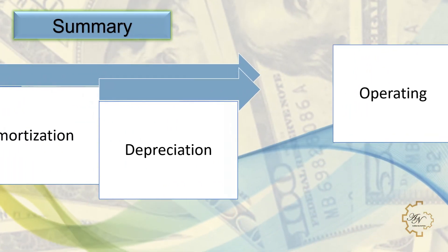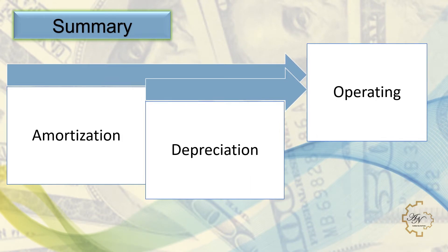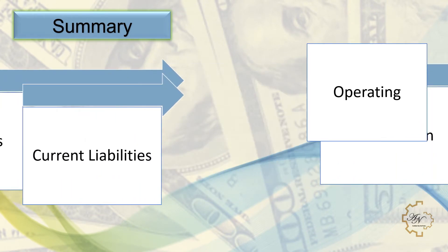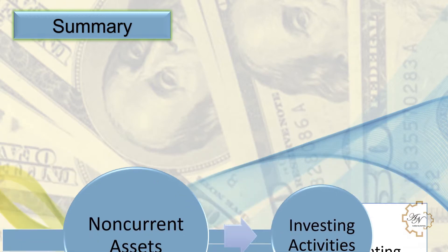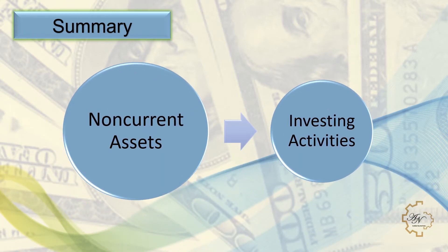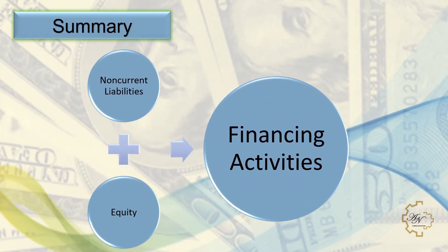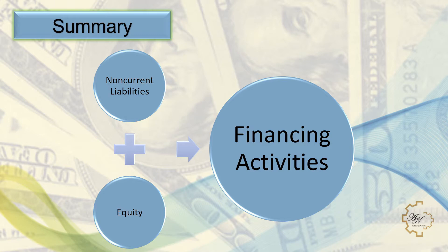Here is a summary of how to prepare a statement of cash flows: any increase in assets is deducted and any increase in liabilities is added, and vice versa. Depreciation and amortization expenses are added to net income. Any change in current assets other than cash and current liabilities affects operating activities. Any change in non-current liabilities and equity other than retained earnings affects financing activities.